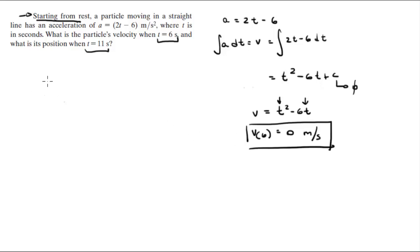Now, to find the position, you know that s is equal to the integral of the velocity with respect to time. The integral comes out to be t cubed over 3 minus 3t squared.